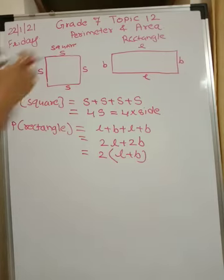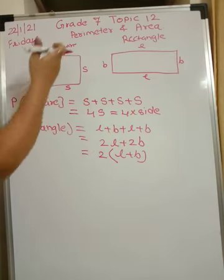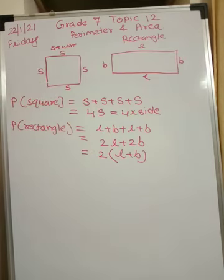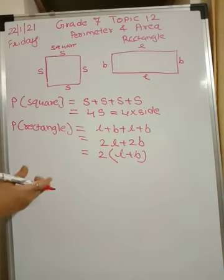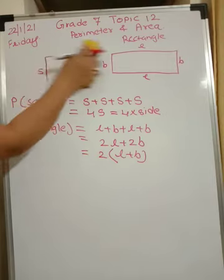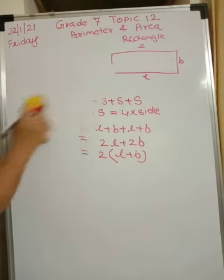And the perimeter of a square is 4 times the side. If the side is a, it will be 4a. So whatever the side is, since all sides are equal in a square, you multiply by 4. Now let us go to the problems — Practice Set 44. If you know this formula, it is very easy to solve the problems.